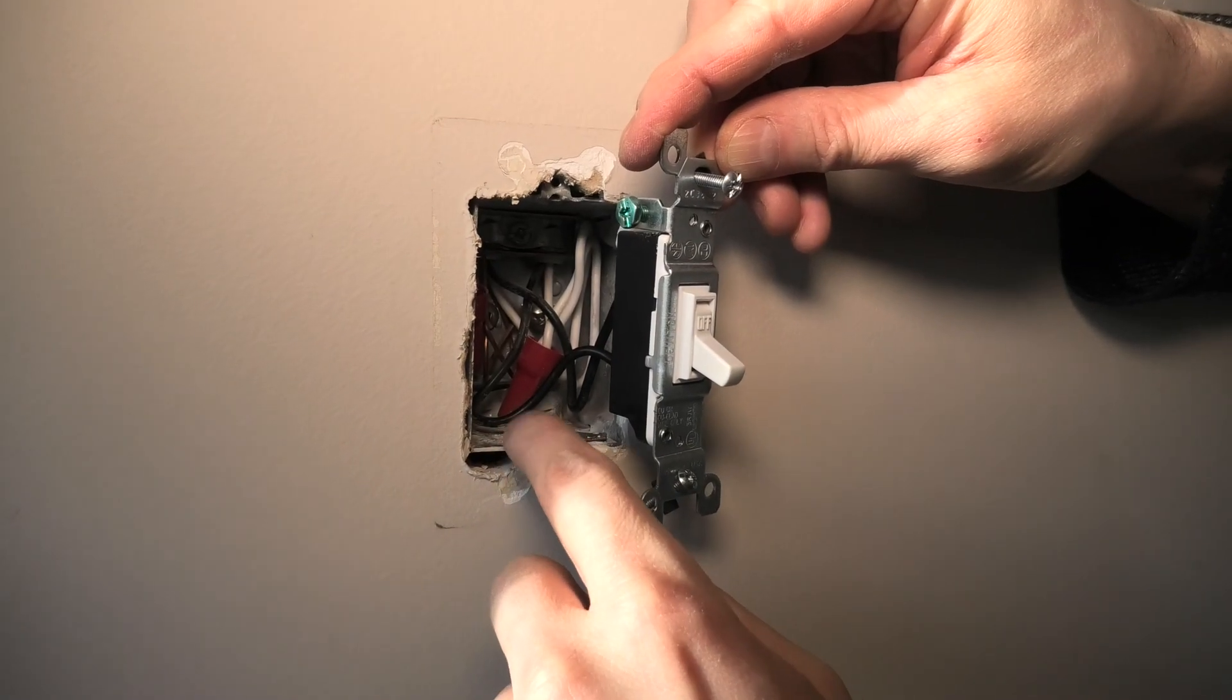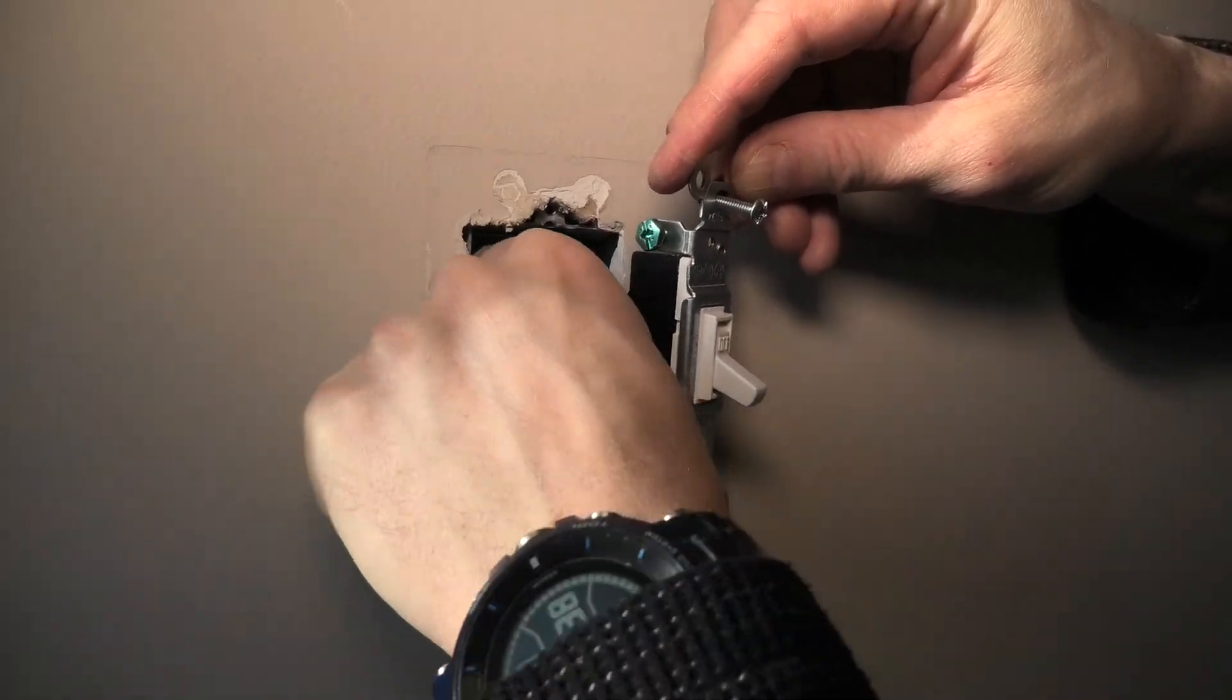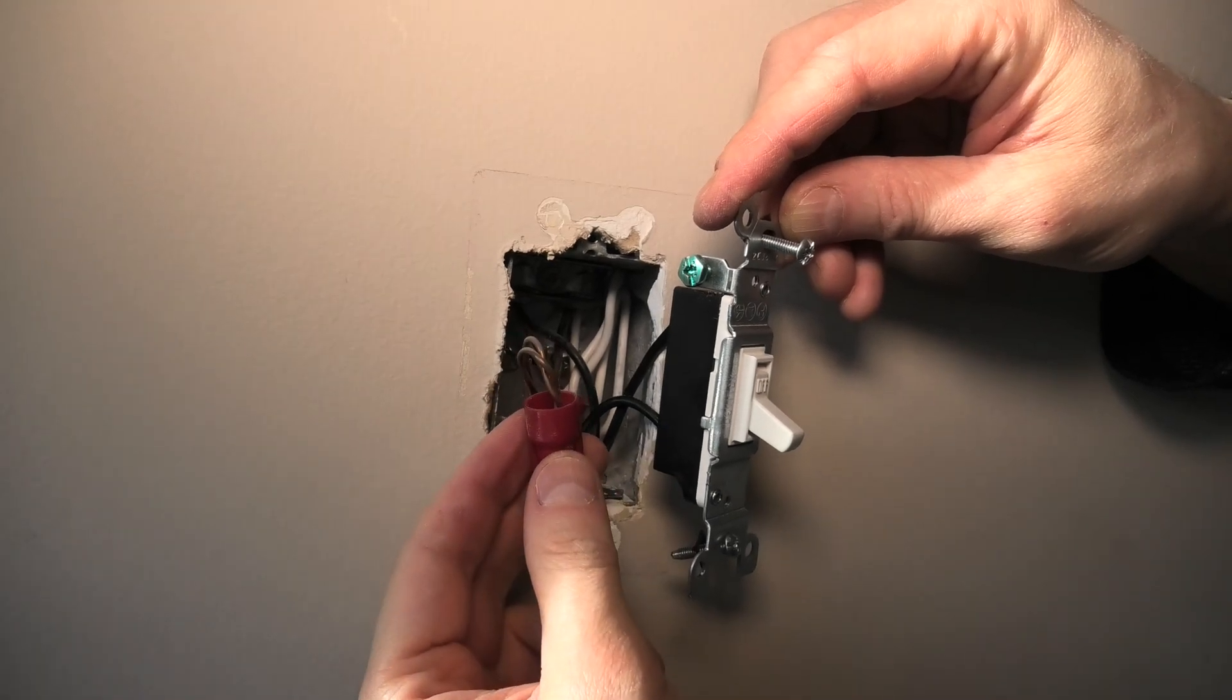If the box was plastic you would need to connect this screw to these grounding wires right here.